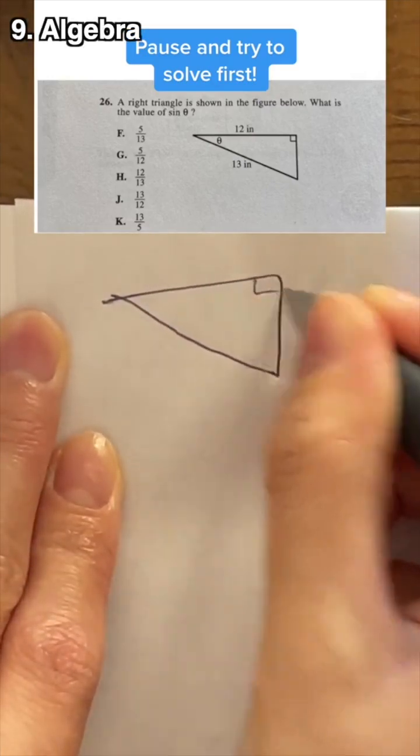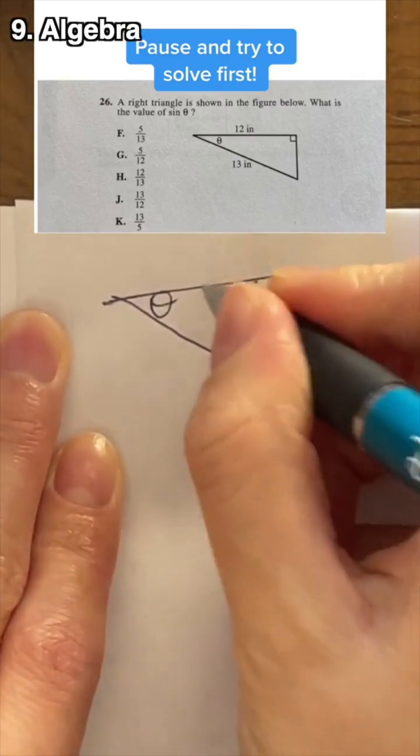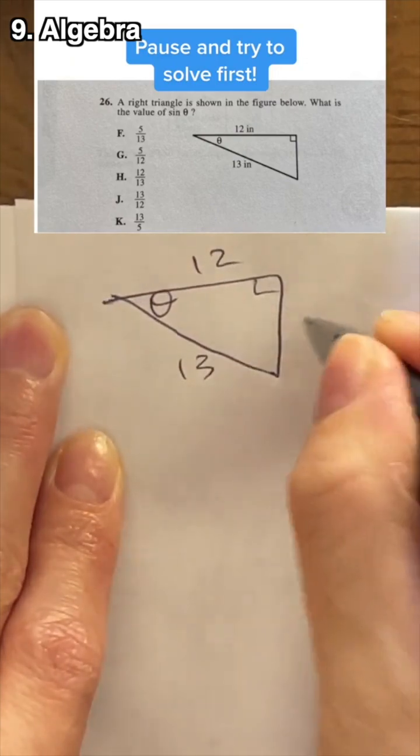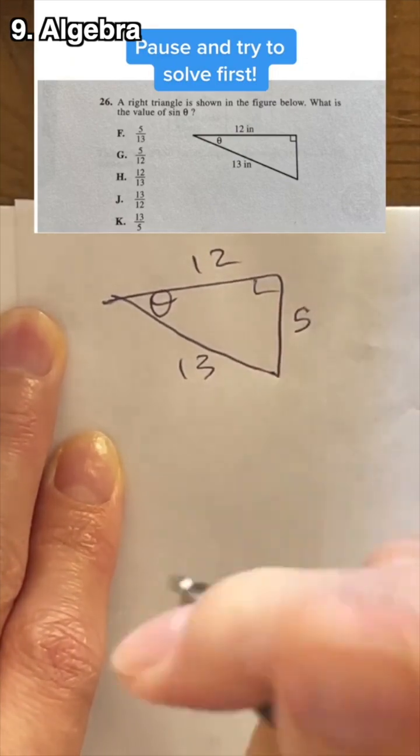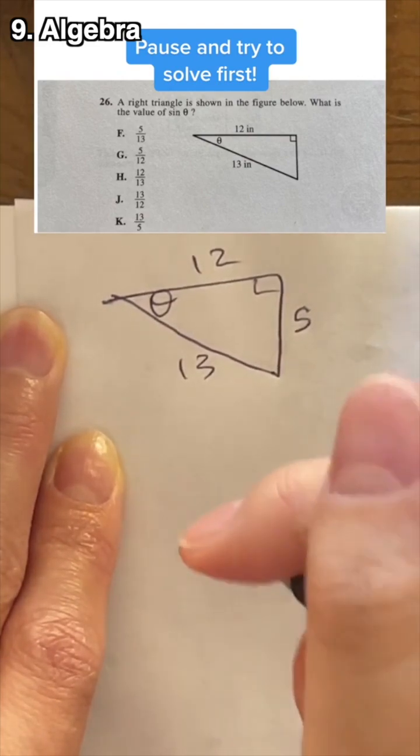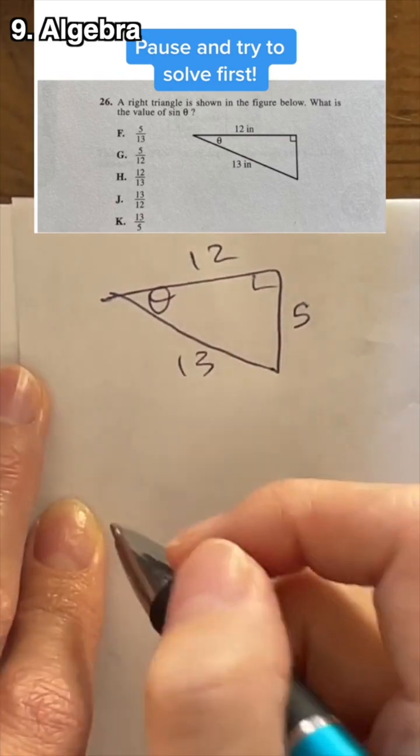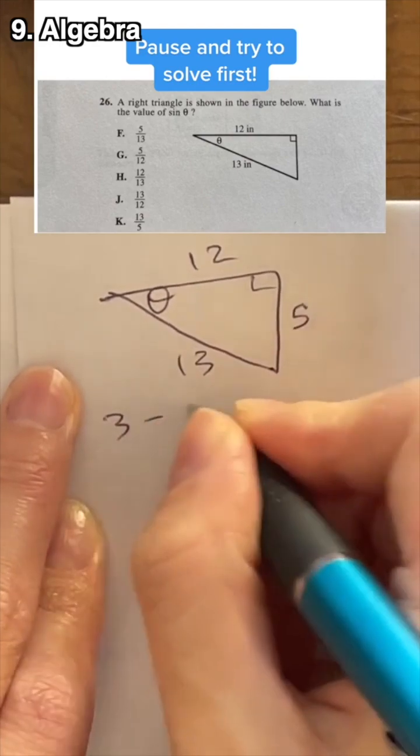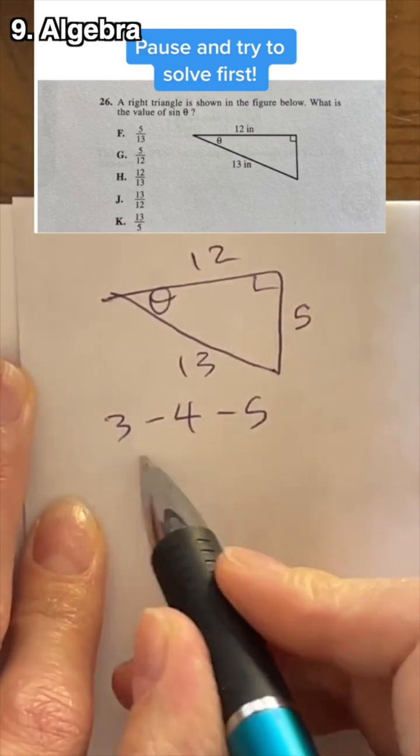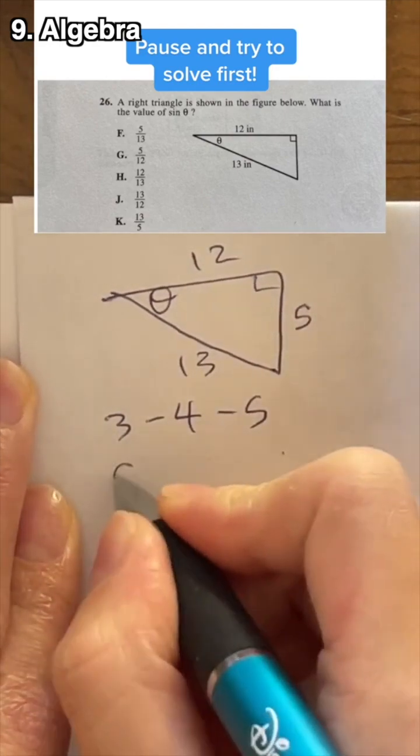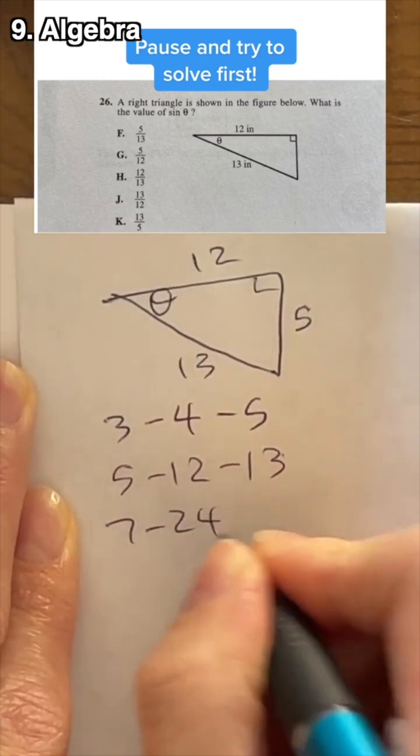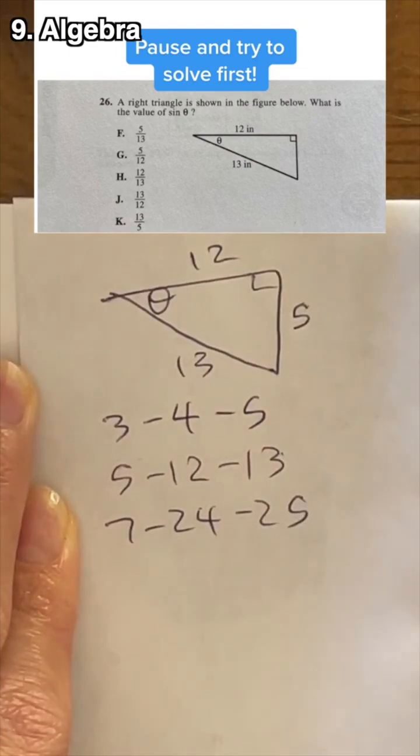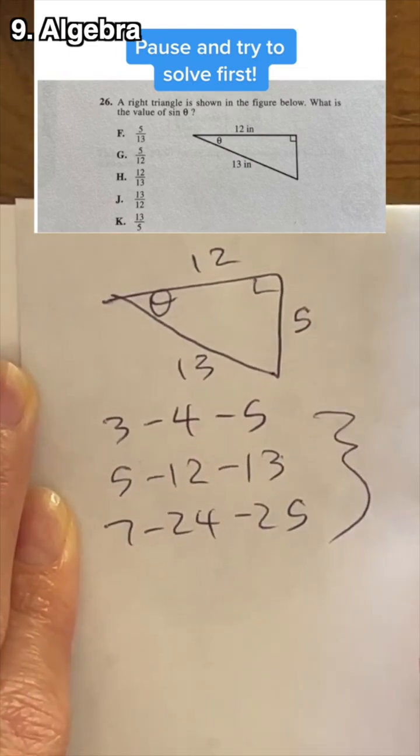Sine is opposite over hypotenuse. So if we have 12 and 13, this, without doing the Pythagorean theorem, is 5. And why is that? This is key to be faster on the exam. This is one of many special right triangles. There's a 3-4-5 triangle, and there's a 5-12-13 triangle. There's also the 7-24-25 triangle. Do you see a pattern here?